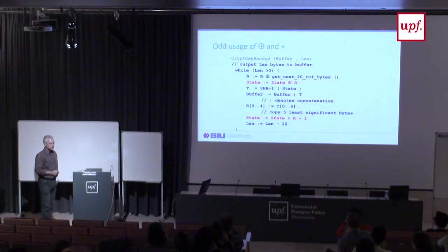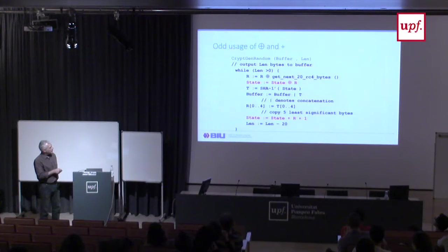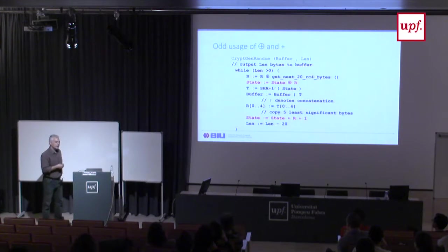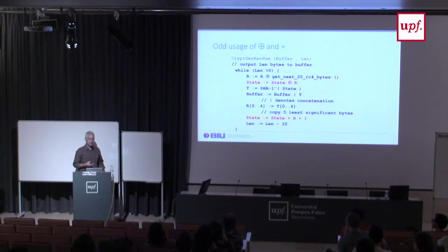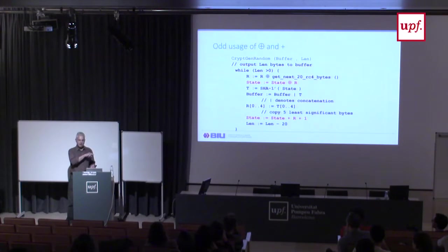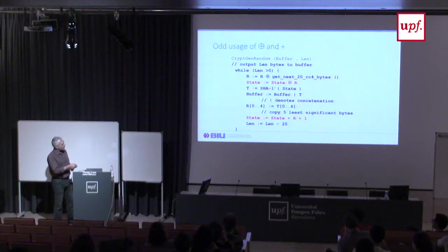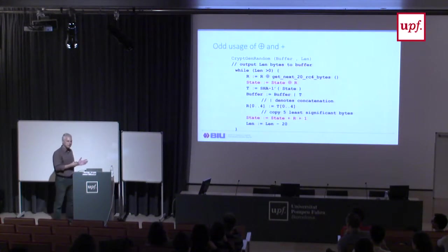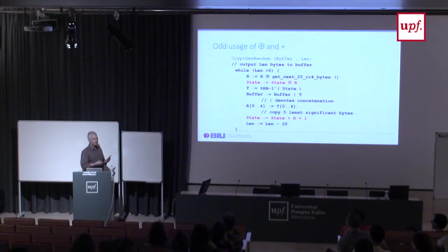Something we noticed was very odd: you XOR into state, then you don't change R, then you add R into state and add one. XOR and addition are almost the same — they only differ if you have a carry bit. So it's almost like you XOR to state and then XOR again, so you kind of remove R. This looked very odd, and we actually reused it afterwards.